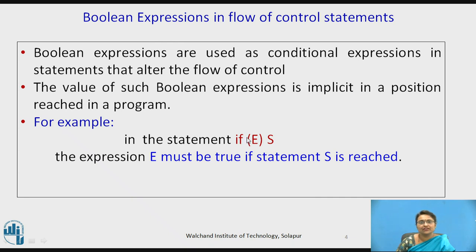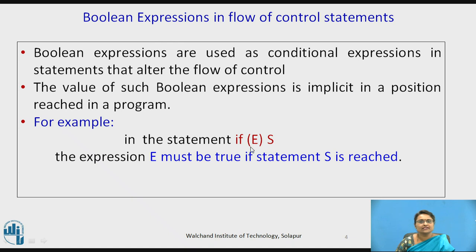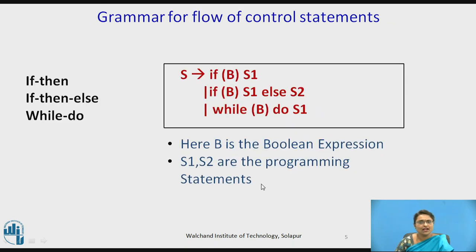Consider this example: if E then S. If E is true, then statement S is executing. Therefore, E must be true if statement S is reached — indirectly, S executes when E is true.